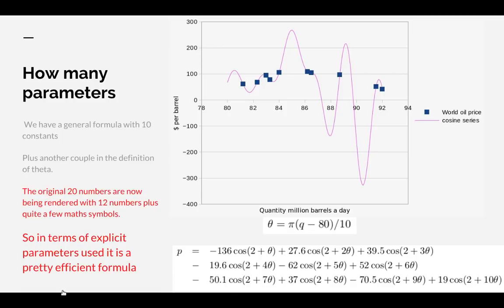The original data had 20 numbers. I've now got 12 numbers plus a few math symbols, so in terms of explicit parameters used, the Ptolemaic theory is pretty efficient at dealing with oil prices here.